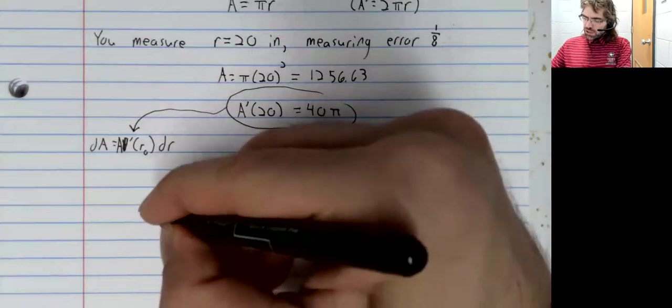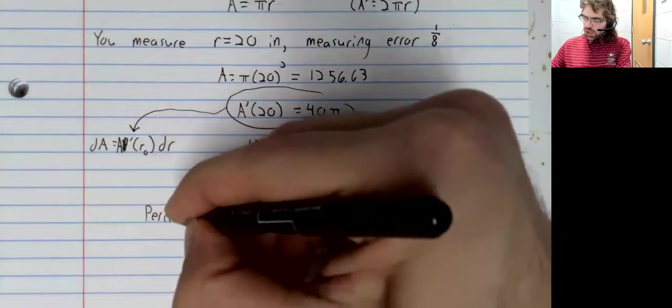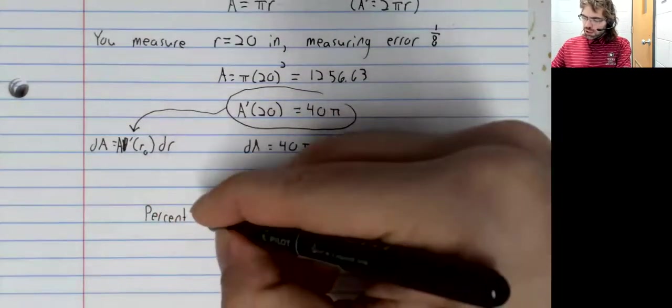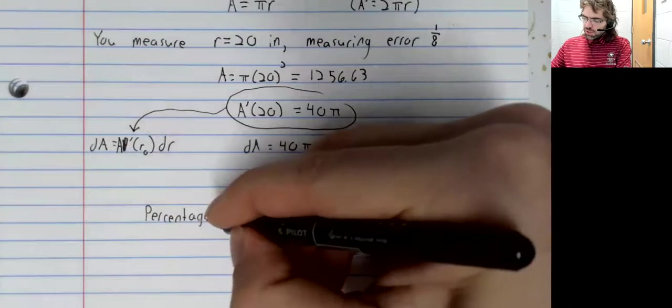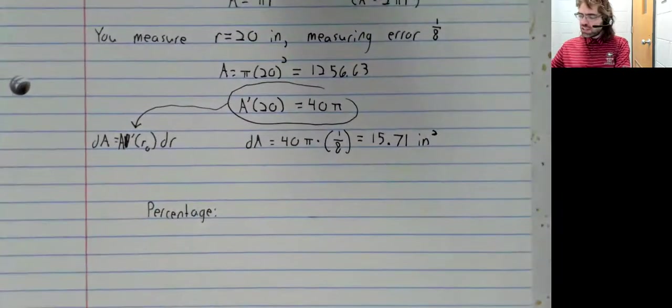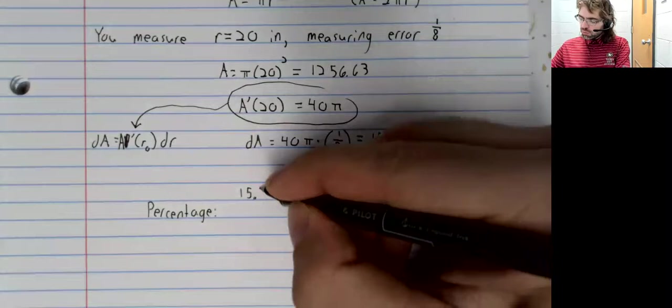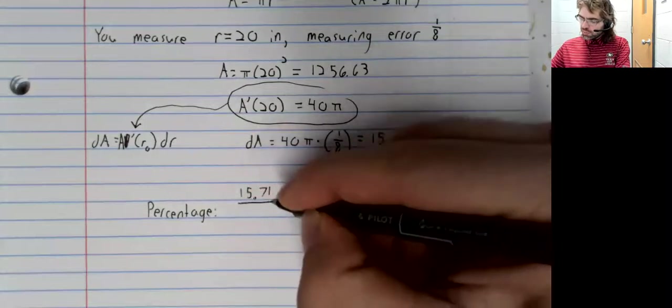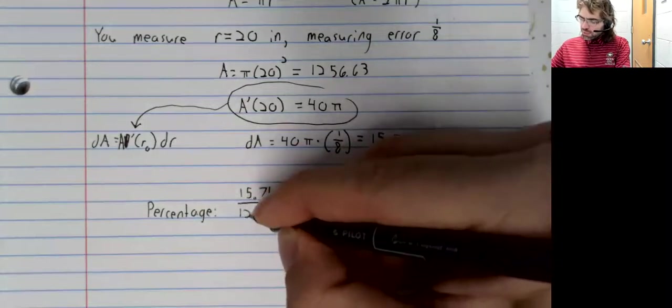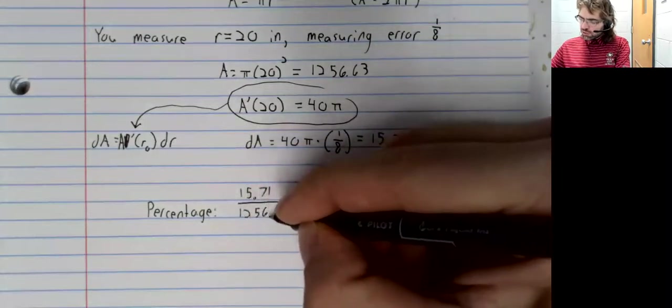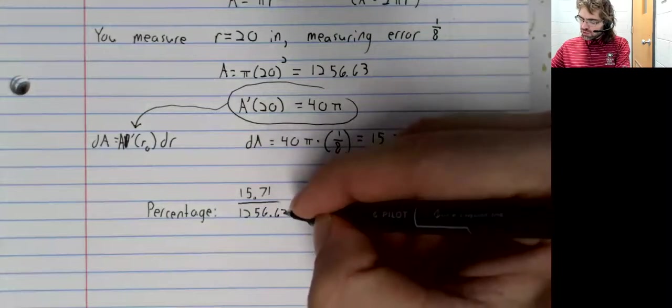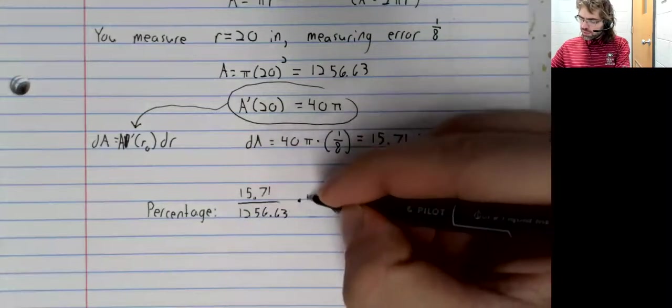We sometimes turn our error into a percentage. So 15.71 divided by 1,256.63.